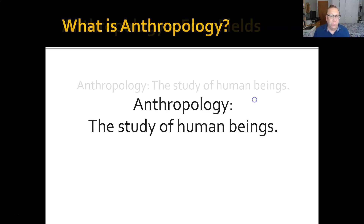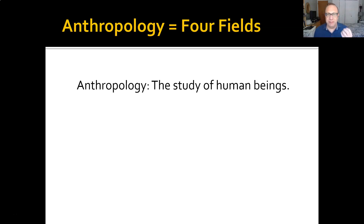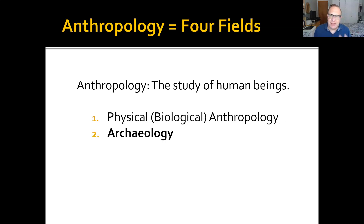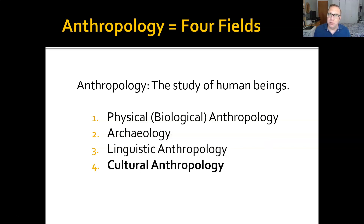There are lots of different ways to study human beings. Traditionally, American anthropology — it's a little different in other countries — has been divided into four related fields, each with its own perspective, its own special lens through which it looks at what it means to be human. The first is physical anthropology, second is archaeology, third is linguistic anthropology, and the fourth is cultural anthropology.